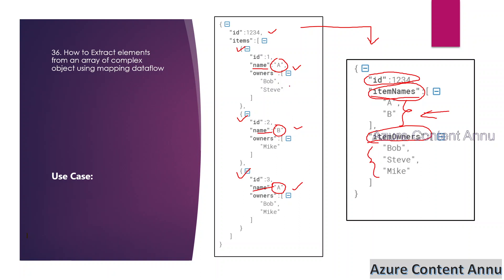Similarly, we will have an 'item_owners' property where we extract the unique owners across all JSONs. The first JSON has Bob and Steve, the second has Mike, and the third has Bob and Mike again. Since Bob and Mike each appear twice, we want only unique names — Bob, Steve, and Mike — in the output, without duplicates.